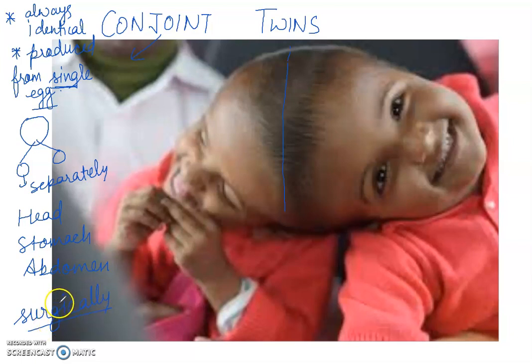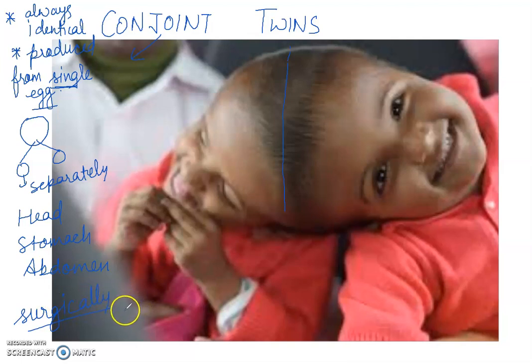In some cases there will be formation of quadruplets, which refers to four babies born at the same time — that is a different point. This is all about conjoined twins. I hope this lecture is useful for your studies. Thank you, my dear students. I hope we will meet soon.